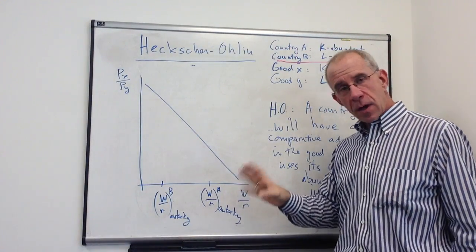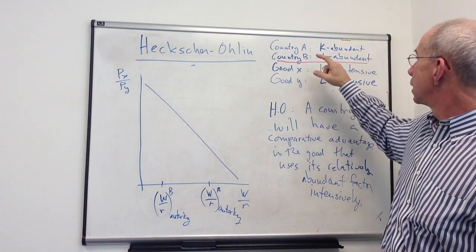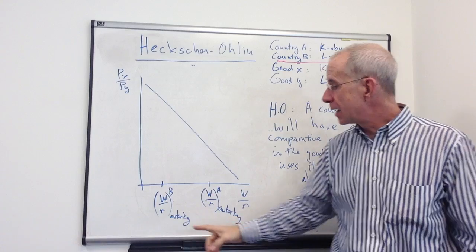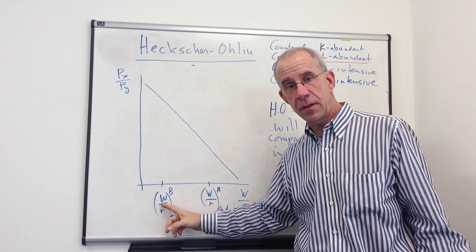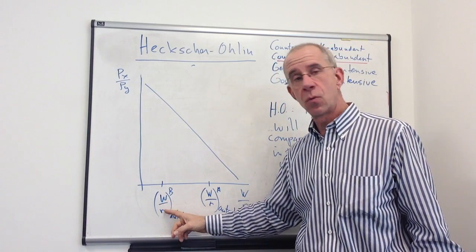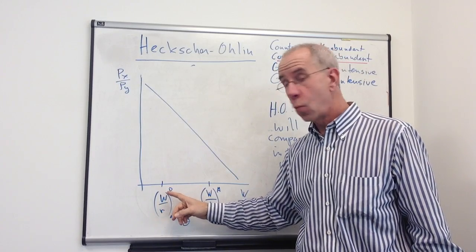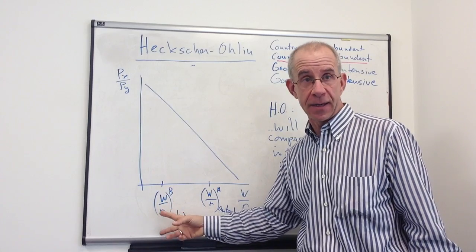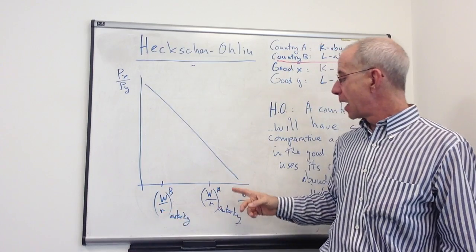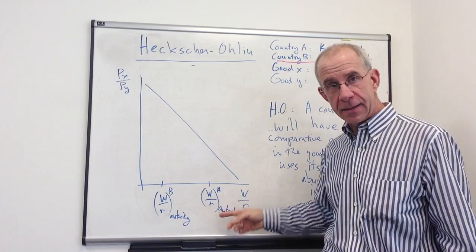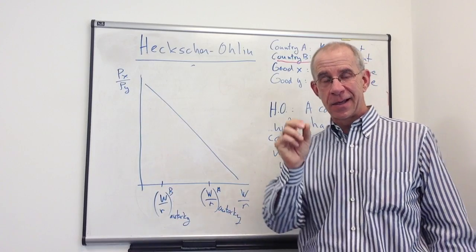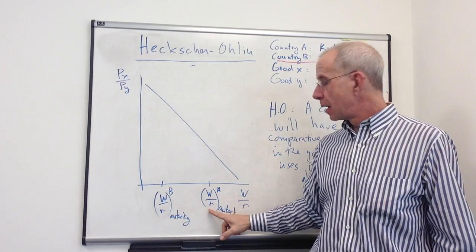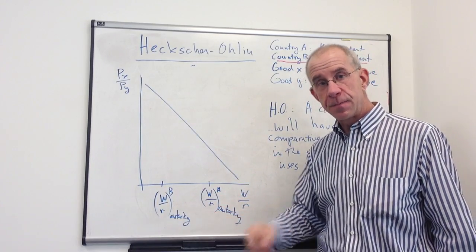So in autarky, the labor abundant country, country B, is going to have a relatively low wage-rental ratio. Wage is relatively cheap, capital is expensive in the labor abundant country. In country A, it's just the reverse. Scarce labor means expensive labor. Abundant capital means cheap capital.